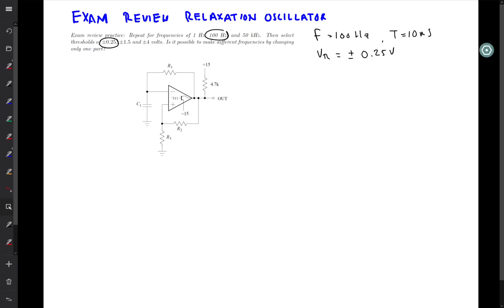Hello students. I'm going to talk now about a relaxation oscillator design that's on the exam review. I'm going to choose the following: 100 Hertz as a frequency and thresholds of plus and minus 0.25 volts. So I've written that here.